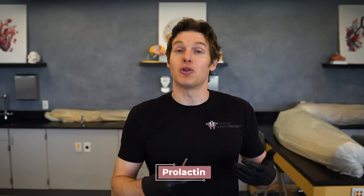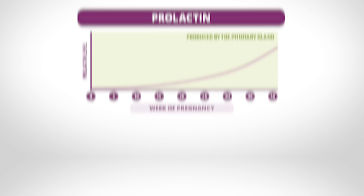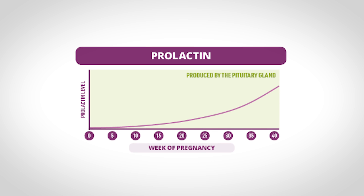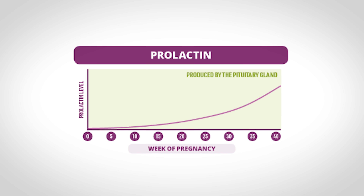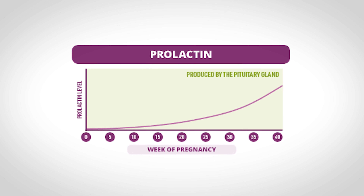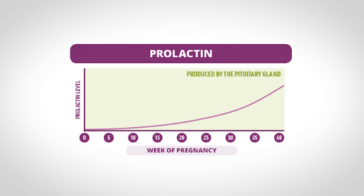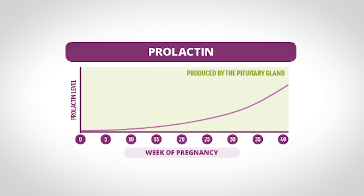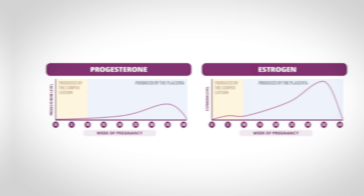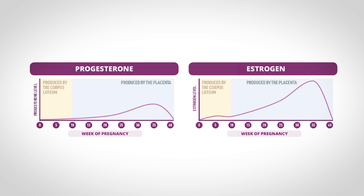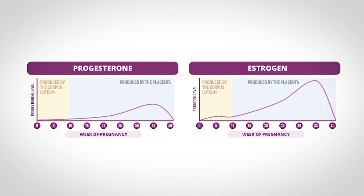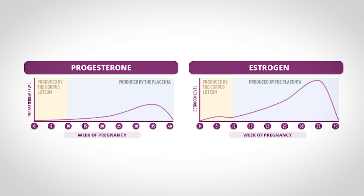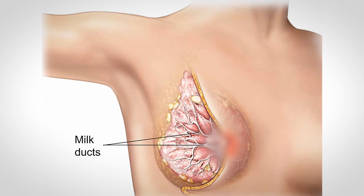Prolactin levels steadily rise from about the fifth week of pregnancy until birth, by which time they have risen about 10 to 20 times normal levels seen in a non-pregnant female. At the same time, the placenta secretes large amounts of estrogen and progesterone, which causes further development of the breasts — causing milk ducts to grow and branch and more fat to be deposited within the breasts.